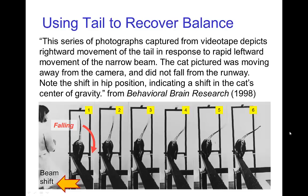If a character has a tail, they can also use it to recover balance. Here you see photos from an experiment where a cat is walking on a beam. The beam is pulled to one side, so the cat would be falling towards screen right, but the cat throws its tail into the fall the same way we would throw our arms or upper torso, and that allows the cat to keep its center of gravity over the beam it's walking on.